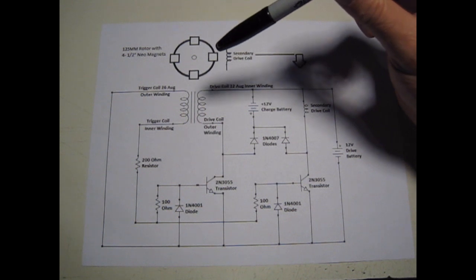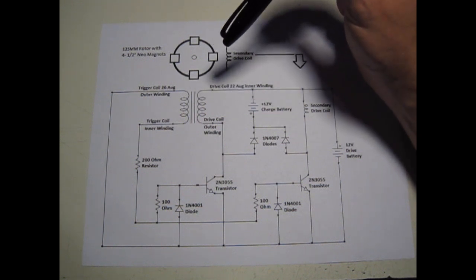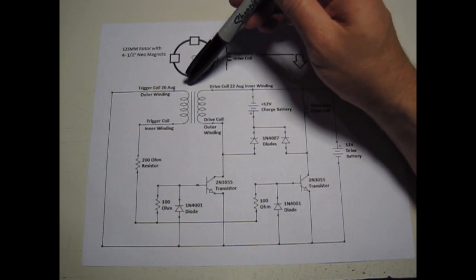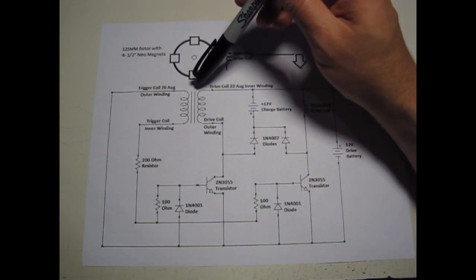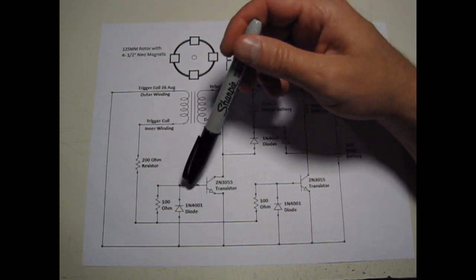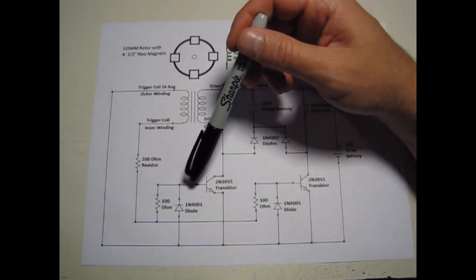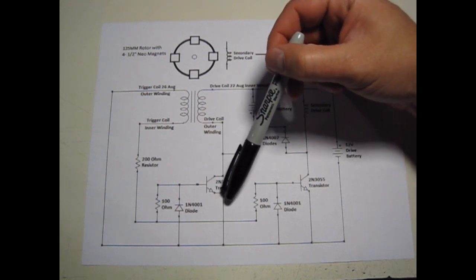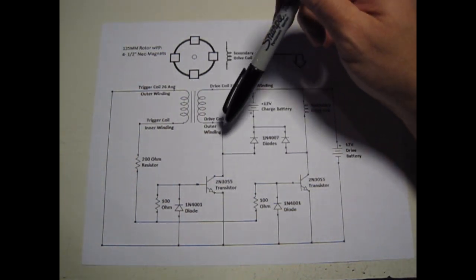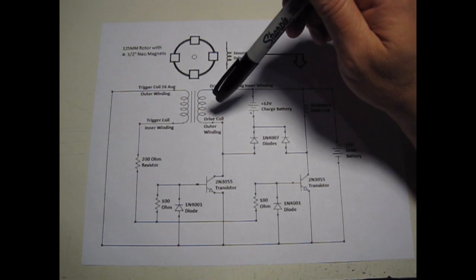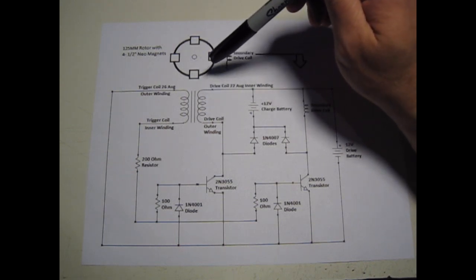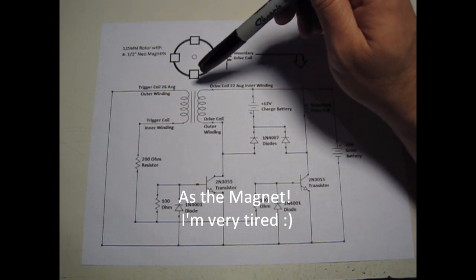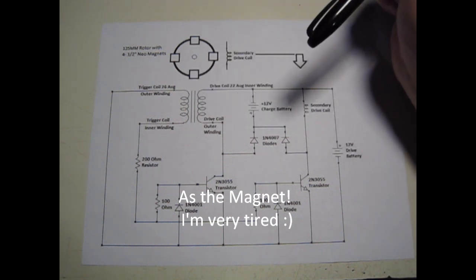When the magnet starts coming around and energizes the coil, the base of the transistor is at zero volts. So this is an open which leaves the charging circuit in play. As the coil starts to energize, that's the energy going into the charge battery.